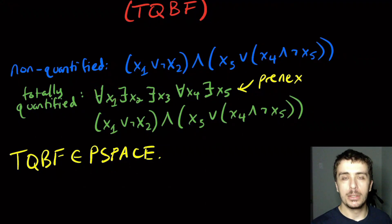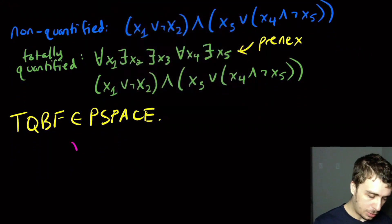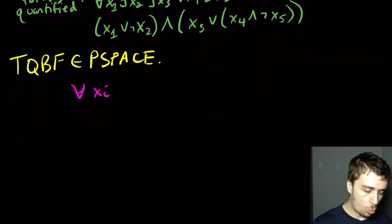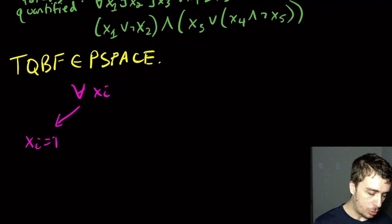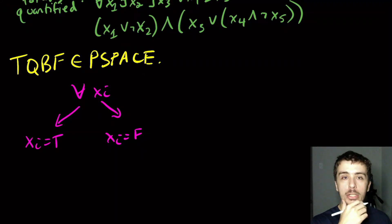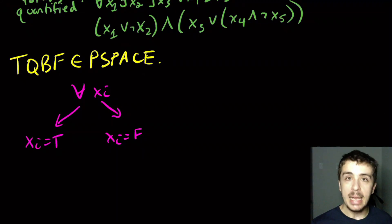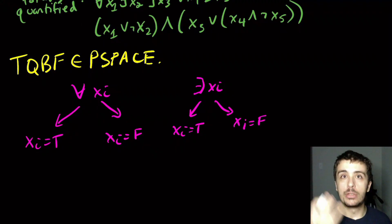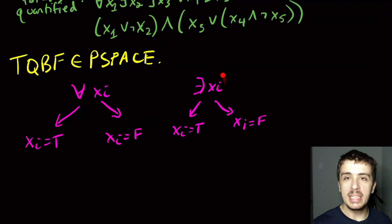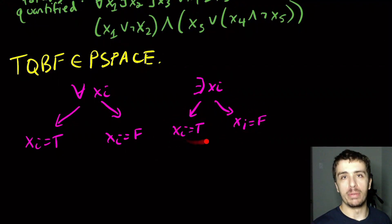If the leading quantifier is 'for all x_i,' we recurse with x_i set to true and also with x_i set to false, and return true if and only if both recursive calls return true. If the leading quantifier is 'exists x_i,' we do the same recursive calls but return true if and only if at least one of the two evaluates to true.